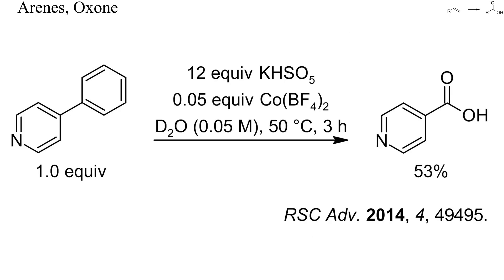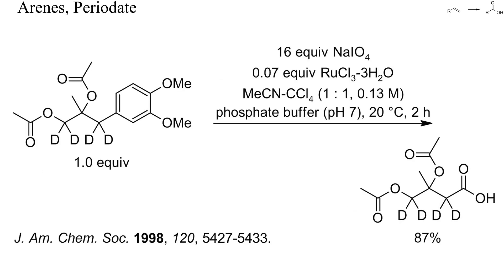Unsubstituted phenyl groups are more difficult to oxidize than naphthalenes or phenols, but will be degraded faster than pyridines. Here, 4-phenylpyridine could be oxidized in fair yield to 4-picolinic acid by treatment with oxone and 5% of a cobalt salt. Today, the most common reagent for small-scale phenyl group oxidations is a mixture of periodate and a ruthenium salt. A representative example is shown here. The reaction conditions were exceedingly mild and gave a high yield of the carboxylic acid.